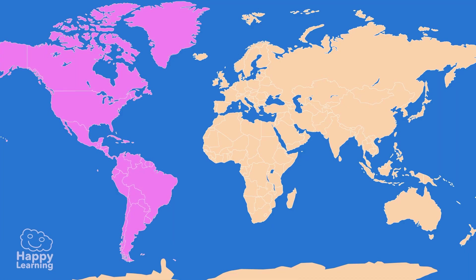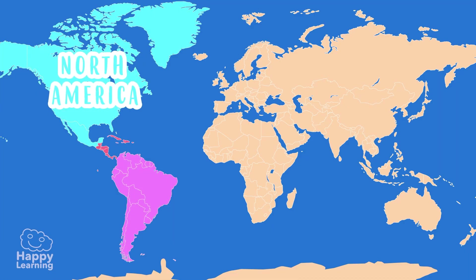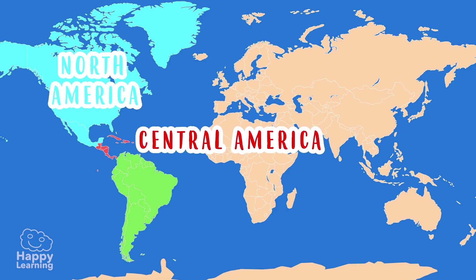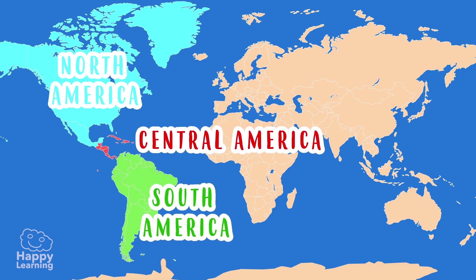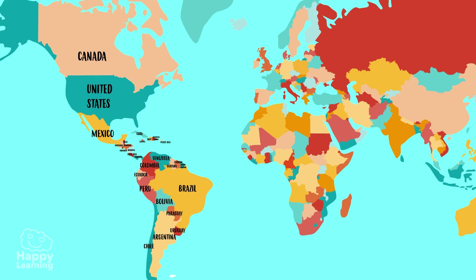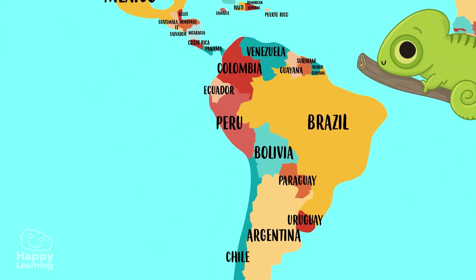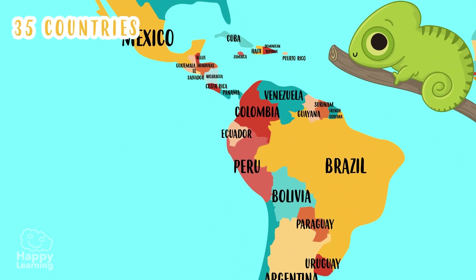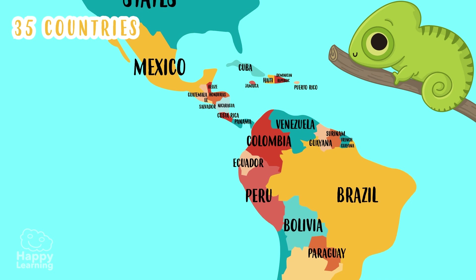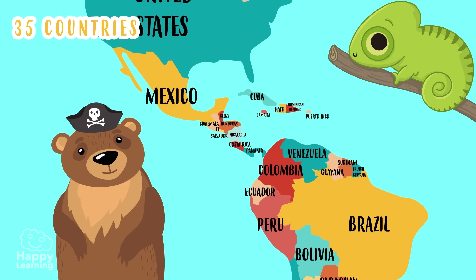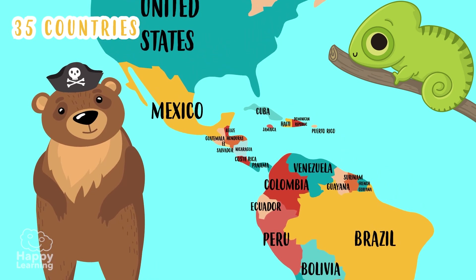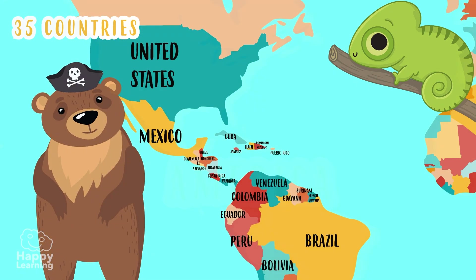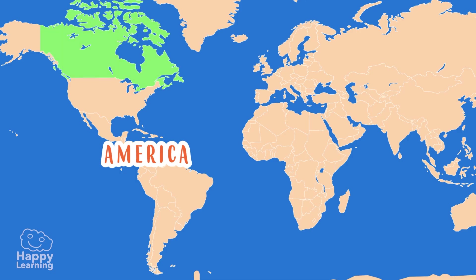The American continent is so large that in order to study it properly, we divide it into three parts: North America, Central America, and South America. In addition, America is made up of 35 countries, as you can see in this political map. Let's take a look at some of them, starting with Canada.